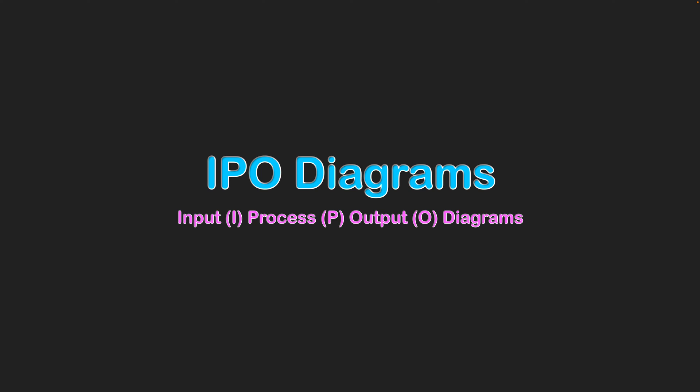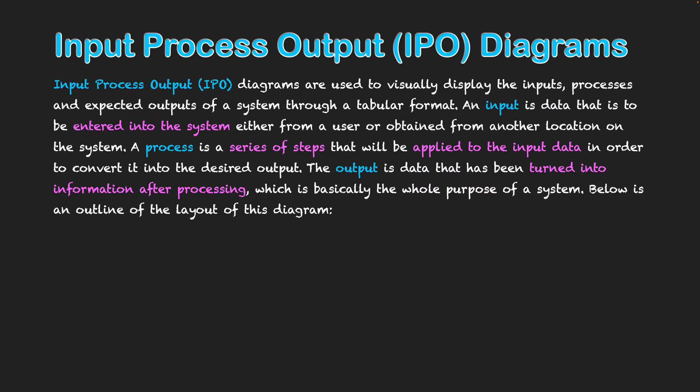IPO diagrams — Input Process Output diagrams — are used to visually display the input, processes, and expected outputs of a system in a tabular format. An input is data entered into the system either from a user or obtained from another location on the system. A process is a series of steps applied to the input data to convert it into the desired output. The output is the data that has been turned into information after processing, which is basically the whole purpose of a system.